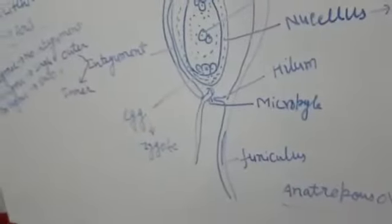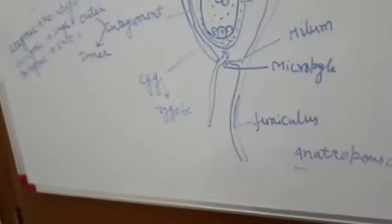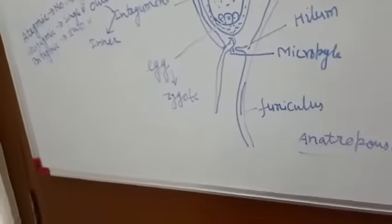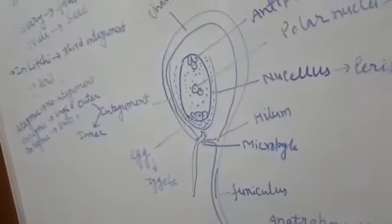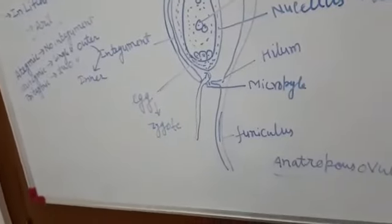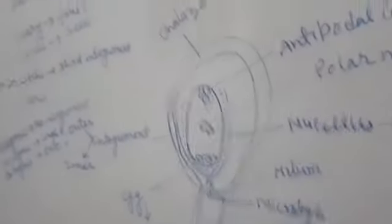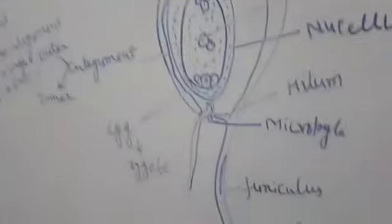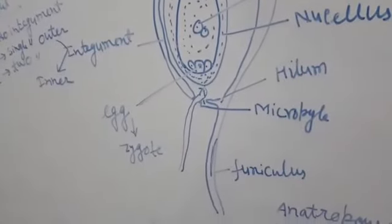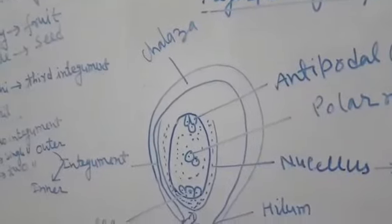I will send you notes about the types of ovules, which is important from an exam point of view. The types of ovule are classified according to their position and the micropyle — this end is called the micropylar end.